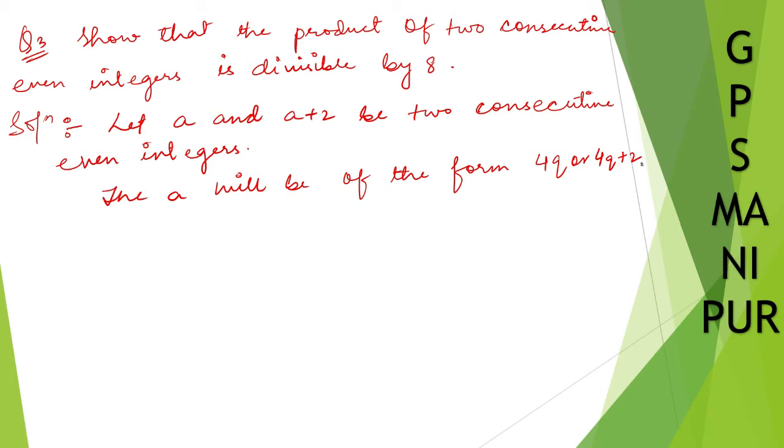So if a is equal to 4q, then a into a plus 2 will be equal to 4q, instead of a put 4q, then 4q plus 2. 4q, so 4q, write down. Take 2 common from here, so 2 comes out. If 2 comes out from here, then it will be 2q plus 1. 4 to the 8, 2q plus 1.